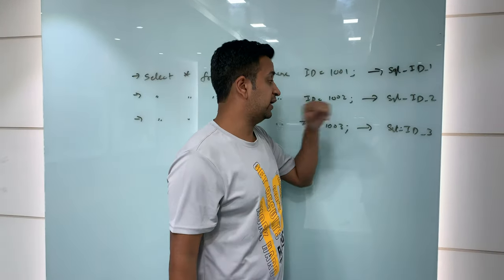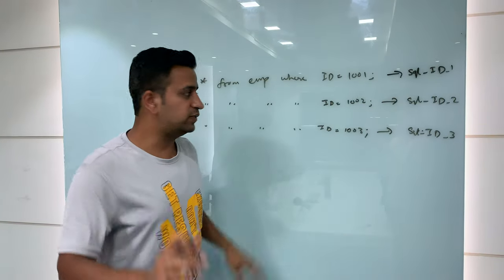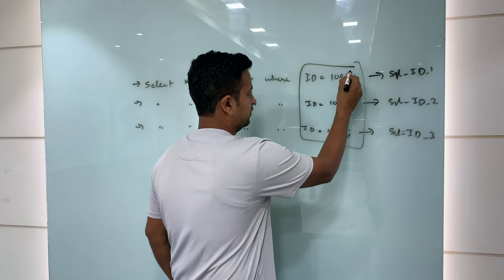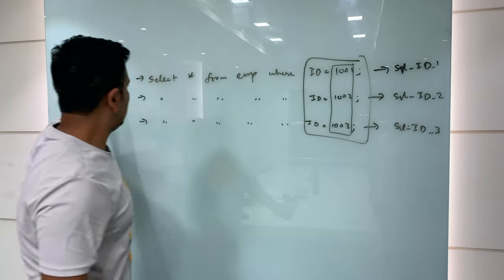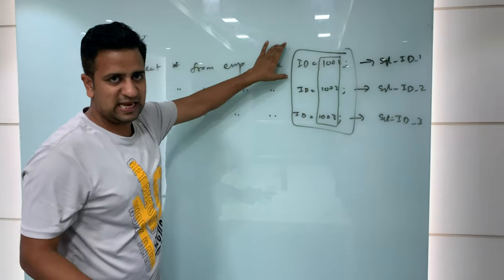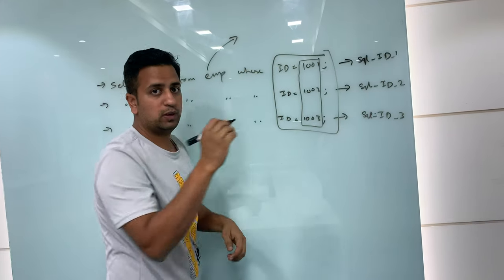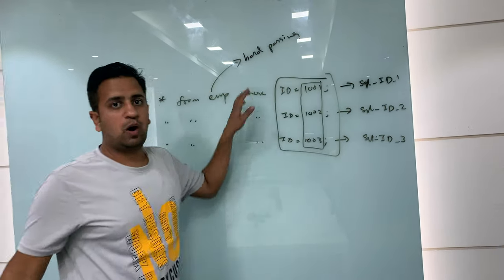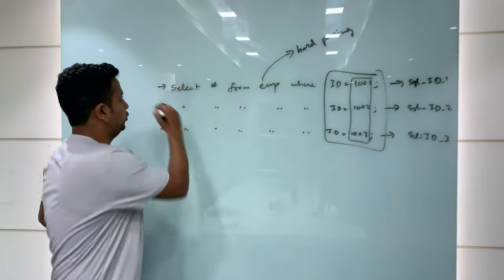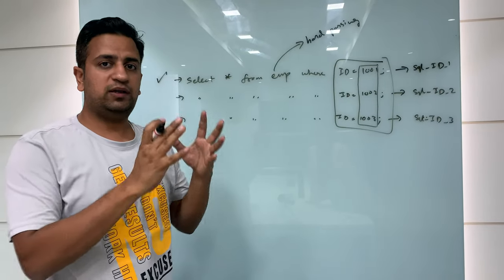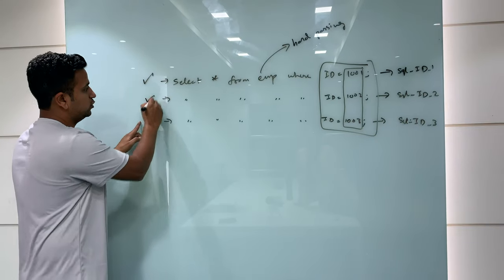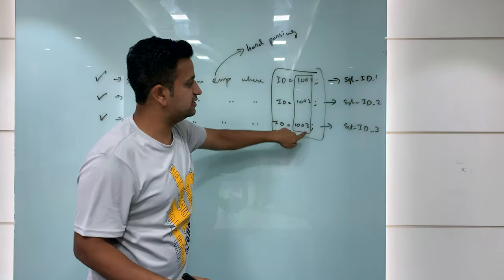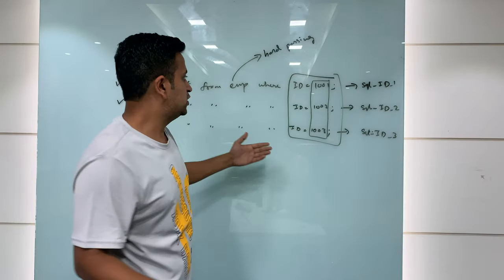The only difference between all three statements is the ID value in the WHERE condition. The first time any of these SQLs runs inside Oracle, hard parsing will happen. But understand this — you are running essentially the same SQL every time, yet each one triggers hard parsing. If you can convert these statements to use soft parsing, you save a lot of cost on the Oracle database.